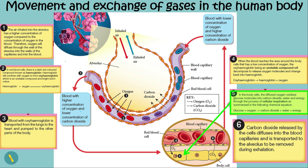In the body cells, the diffused oxygen oxidises glucose molecules into carbon dioxide, water, and energy through the process of cellular respiration. Therefore, body cells have a higher concentration of carbon dioxide than in the capillaries. Carbon dioxide released by the cells diffuses into the blood capillaries and is transported to the alveolus to be removed during exhalation.